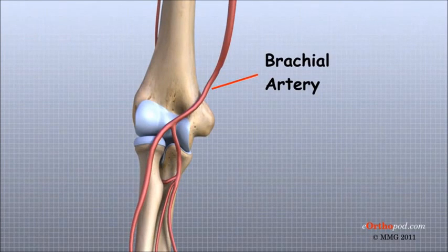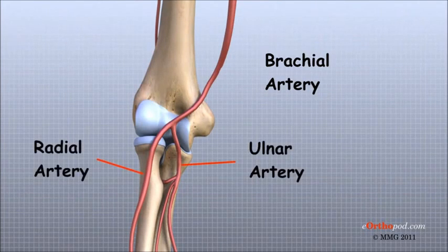If you place your hand in the bend of your elbow, you may be able to feel the pulsing of this large artery. The brachial artery splits into two branches just below the elbow, the ulnar artery and the radial artery. These two branches continue into the hand.